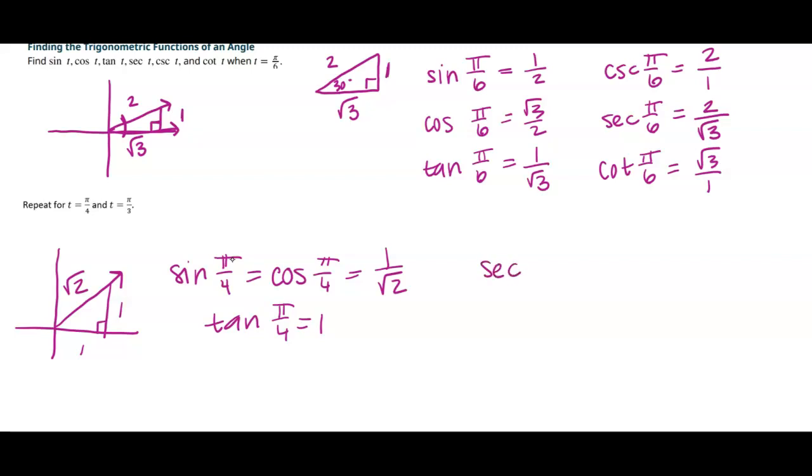It's also true that the secant and cosecant of pi over 4 are the same at root 2. And cotangent is also 1. And again, I'm just using the ratios they were given in the previous videos. So if you need to write those down and take notes, you can do that. But I'm just using opposite, adjacent, and hypotenuse ratios and just defining these common angles that we're going to be using in the first quadrant.